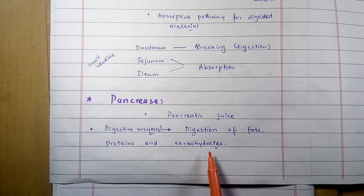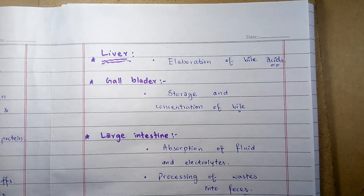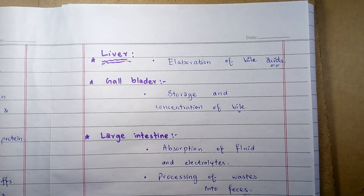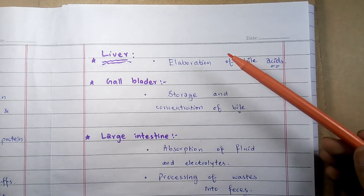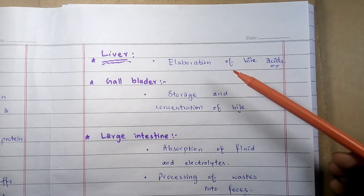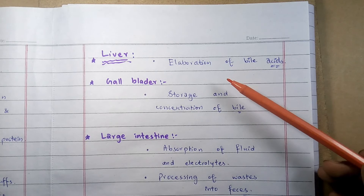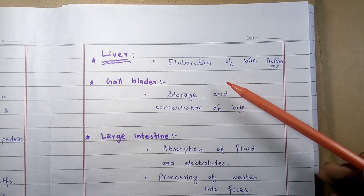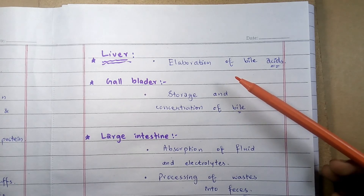Moving toward the liver: the main digestive function of the liver is the processing of nutrients absorbed from the small intestine. It also produces bile into the small intestine for fat and some vitamin digestion.